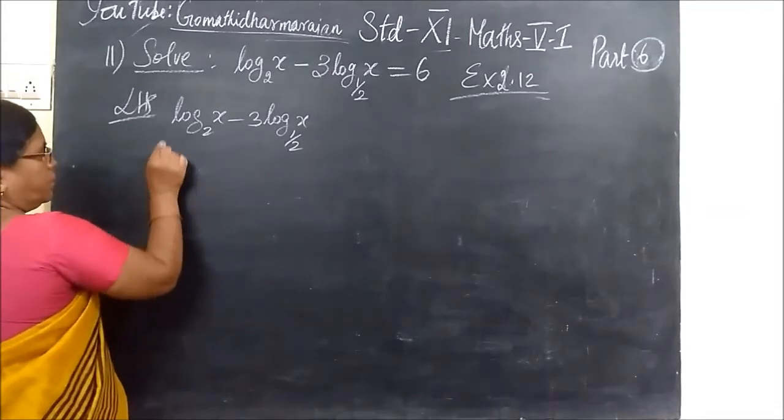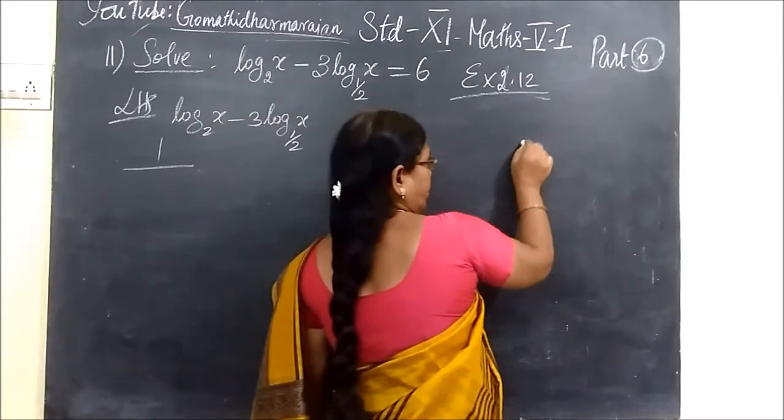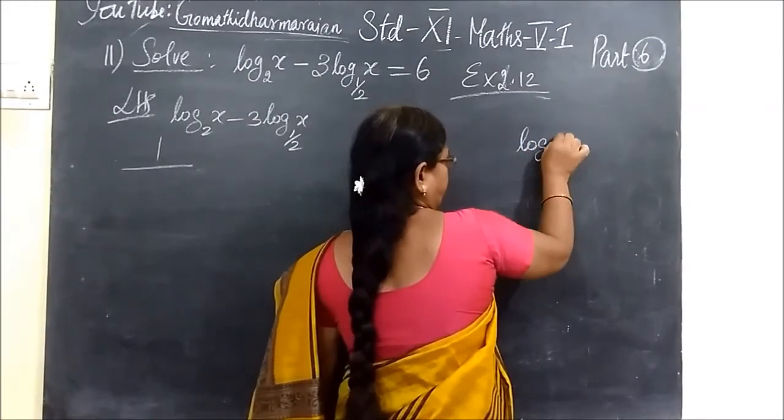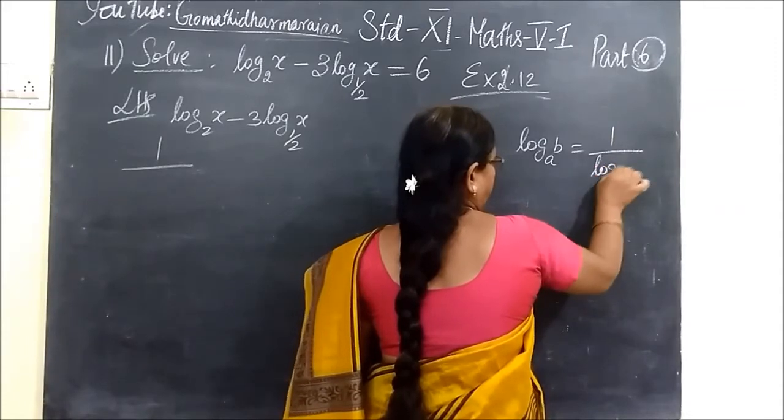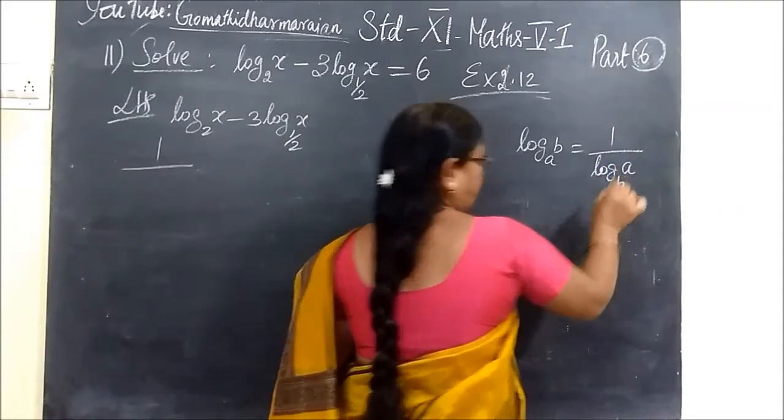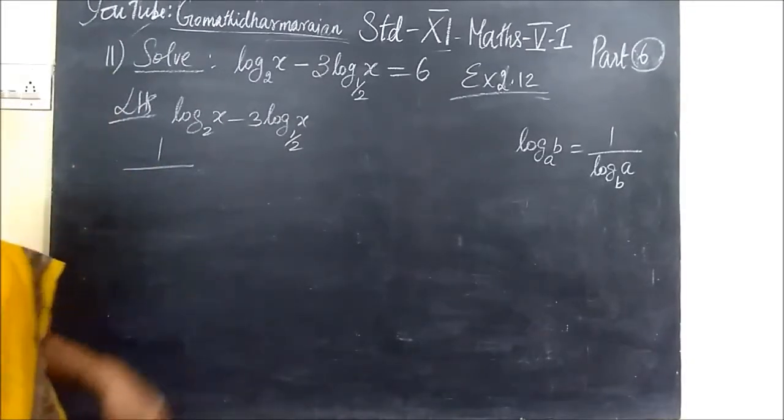Now, you consider change of base rule. You know, change of base rule. Once again, we remember, this is equal to 1 by log in the A, in the B. This is change of base root or box root.